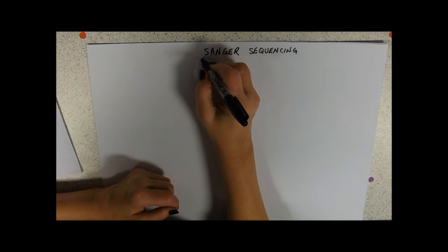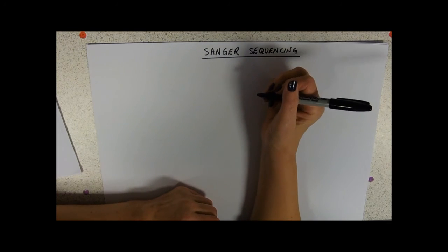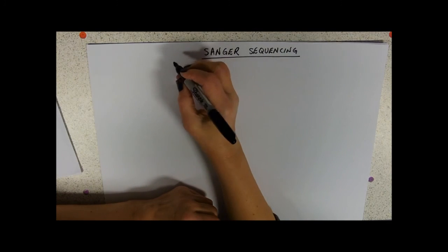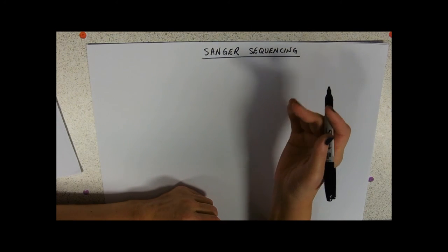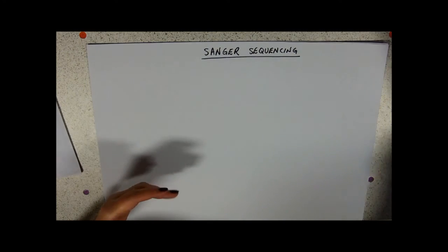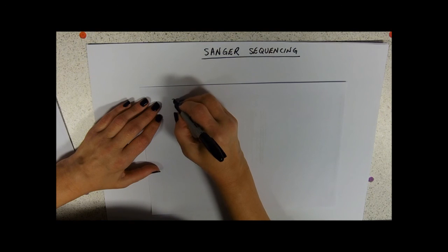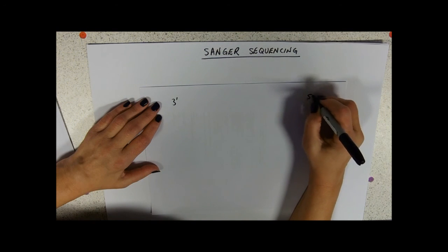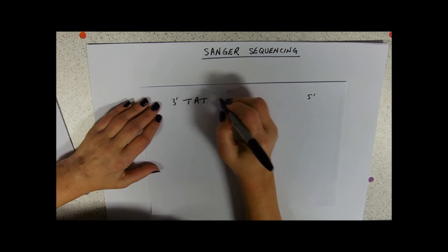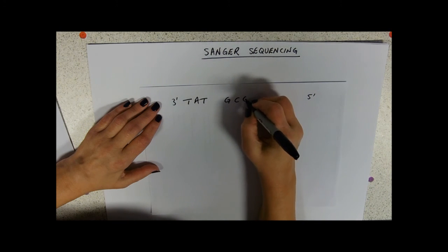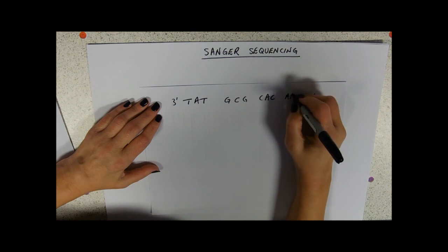So we're obviously talking about DNA, and if we imagine that we've got a piece of DNA and obviously we don't know the sequence of this DNA. So we imagine we've got a piece of DNA and it has a three prime end, obviously, and a five prime end, and its base sequence is TAT, G, C, G, C, A, C, A, A, T.